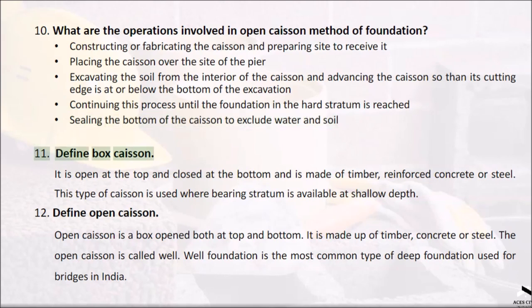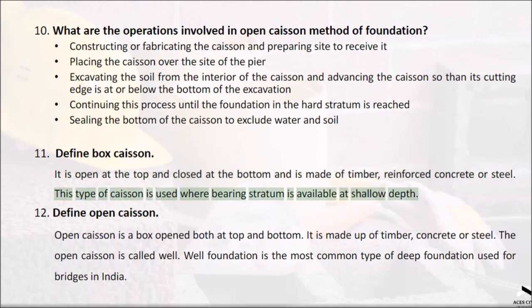Question 11: Define box caisson. It is open at the top and closed at the bottom, and is made of timber, reinforced concrete, or steel. This type of caisson is used where the bearing stratum is available at shallow depth.